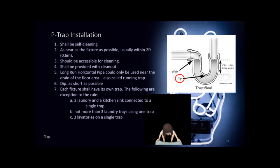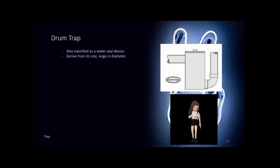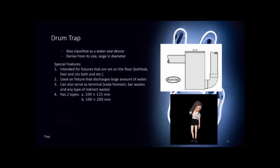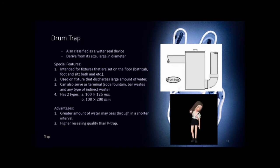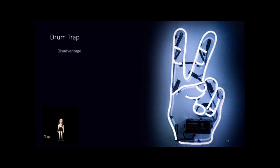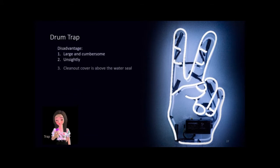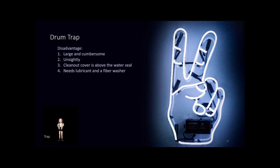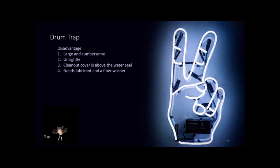The P-trap installation is based on the national plumbing code and is included in the handout. The drum trap is also classified as a water seal device. The name was derived from its large diameter. Its advantages are that a greater amount of water may pass through it in a shorter interval without danger of trap seal loss and it has a higher receiving quality. The disadvantages are that it is large and cumbersome, unsightly, and requires lubricant and a fiber washer at the joint between the cover and the body of the trap to clean it.